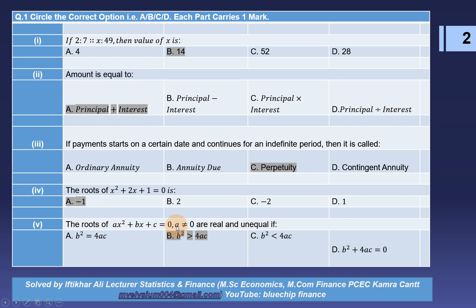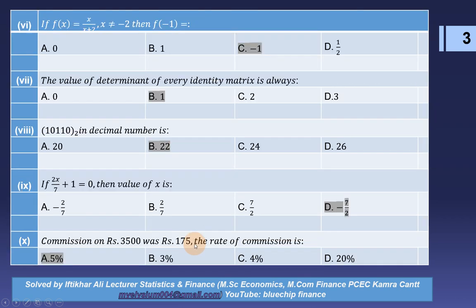The roots of aX² + bX + c = 0, if a is not equal to 0, are real and unequal if the correct option is b² is greater than 4ac. MCQ number 6: if f(X) = X divided by (X + 2), where X is not equal to minus 2, then f(minus 1) equals — the correct option is C: minus 1.